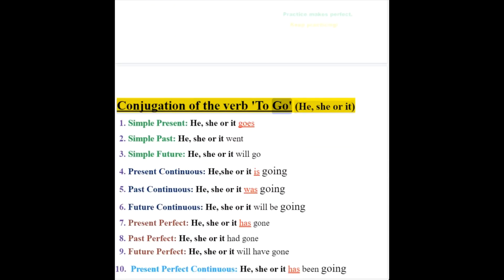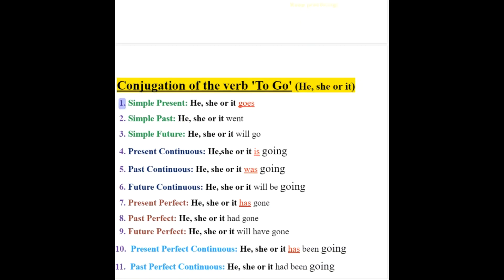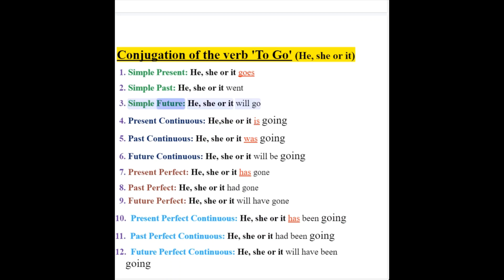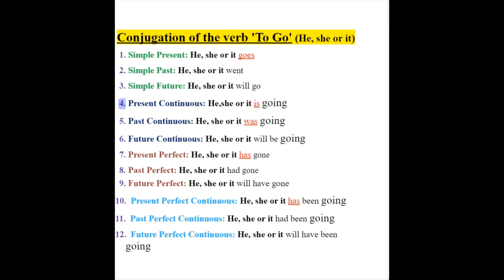Conjugation of the verb to go, he, she or it. 1. Simple present: he, she or it goes. 2. Simple past: he, she or it went. 3. Simple future: he, she or it will go. 4. Present continuous: he, she or it is going.